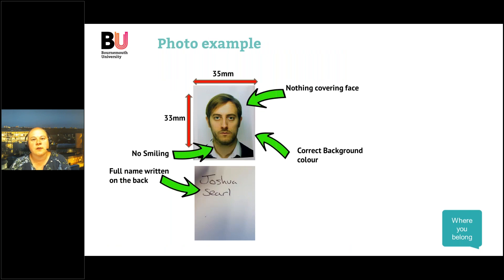The UKVI — UK Visas and Immigration — have very strict requirements on photographs. The paper must be 35 millimetres wide and 33 millimetres long. You can't have anything covering your face. You have to have the correct background colour, which is grey or white. You can't be smiling or showing your teeth. We recommend you remove glasses, and if you have a fringe it must not be over your face or making a shadow. Print your name as it appears on your passport on the back of the photographs.